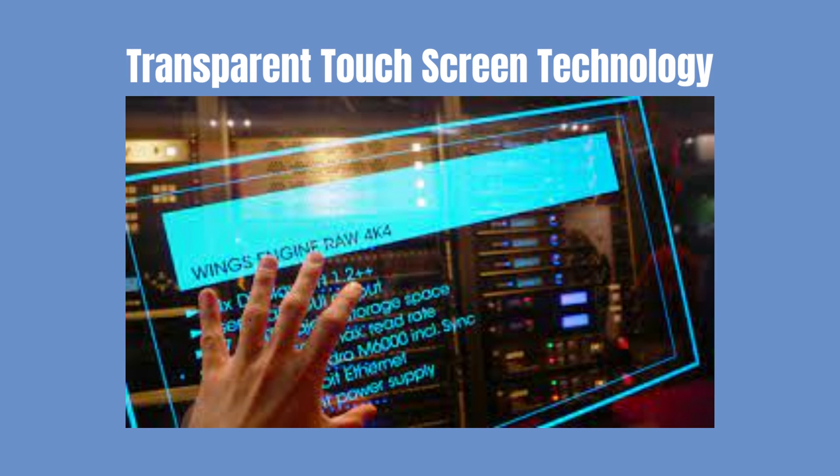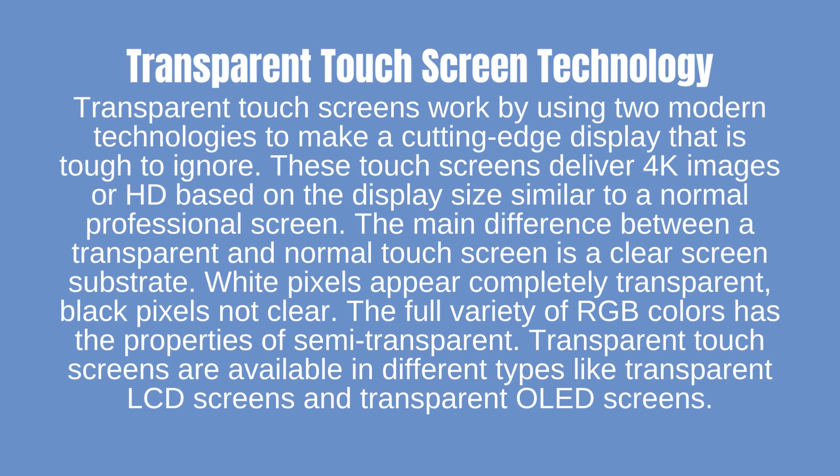Transparent touchscreens work by using two modern technologies to make a cutting-edge display. These touchscreens deliver 4K or HD images based on display size, similar to a normal professional screen. The main difference between a transparent and normal touchscreen is a clear screen substrate. White pixels appear completely transparent while black pixels are not clear. The full variety of RGB colors has semi-transparent properties. Transparent touchscreens are available in types like transparent LCD screens and transparent OLED screens.